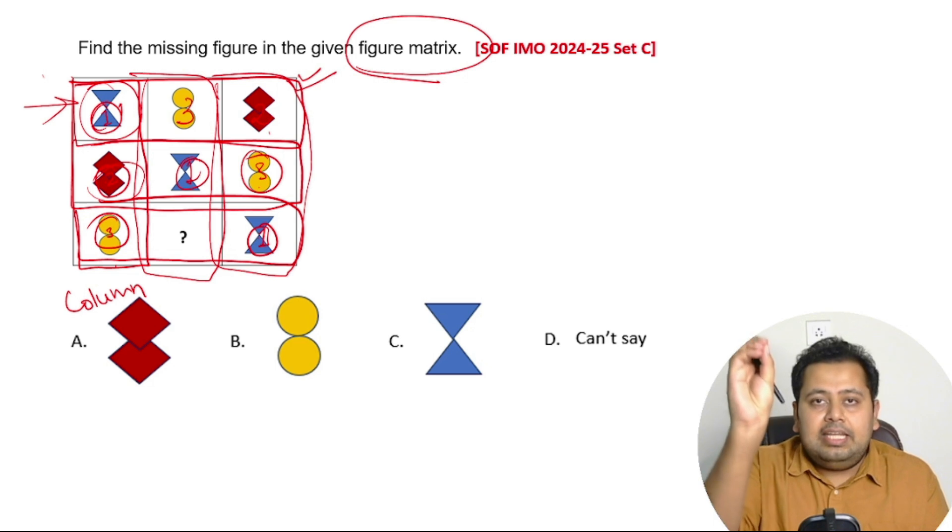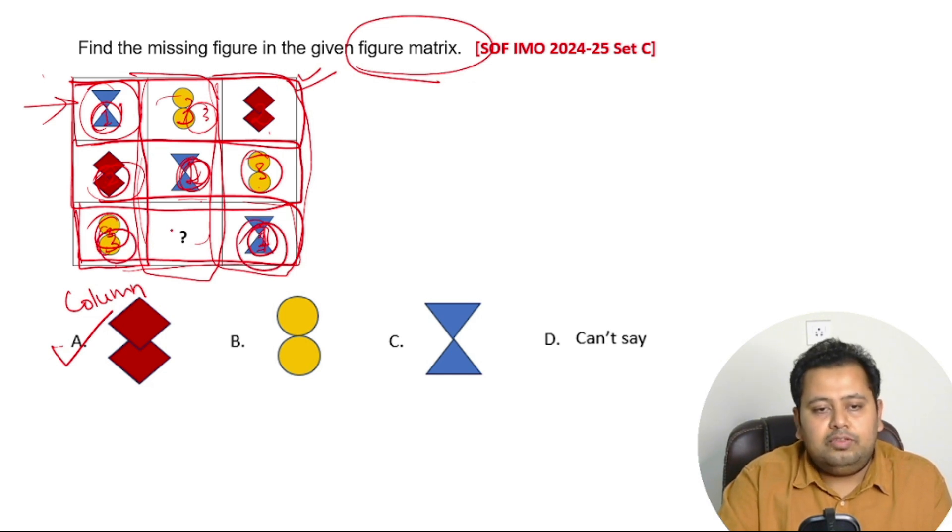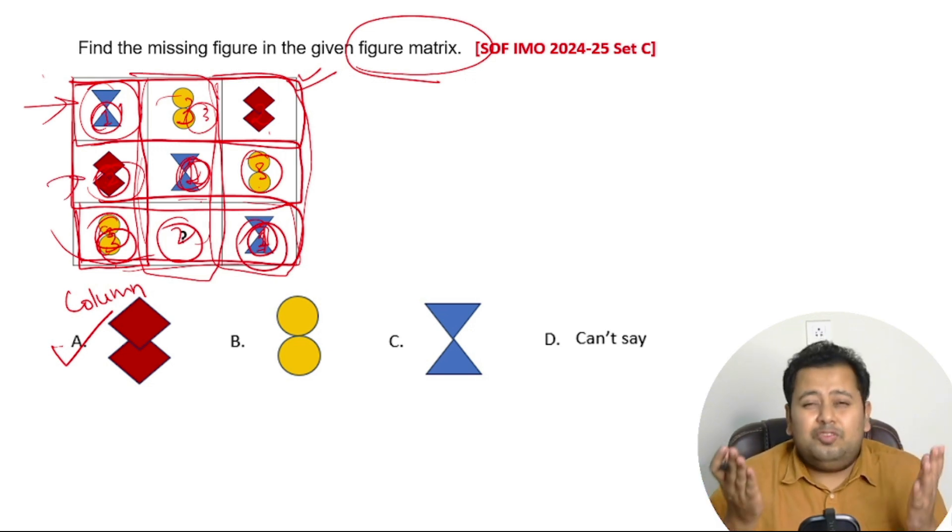Now if you check this column, you have figure number three here, you have figure number one here. What is missing is figure number two. So that is why the correct answer is figure number two. If you just want to check row wise as well, you see figure number three is here, there is a figure number one here, so what is missing is figure number two. So this is the answer.